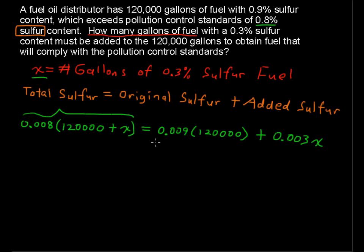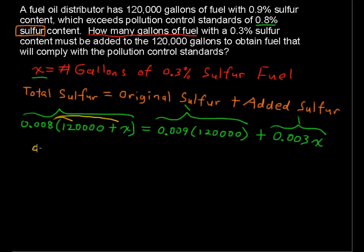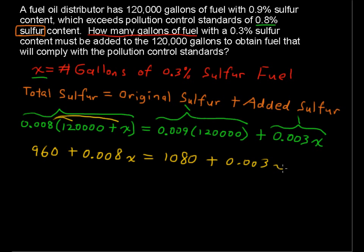Now we have our linear equation and we can start to solve this. Distribute 0.008 to everything in the parentheses, and you get 960 plus 0.008x equals 1080 plus 0.003x.